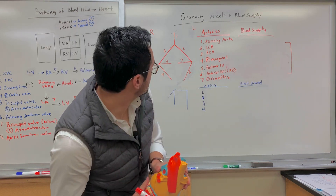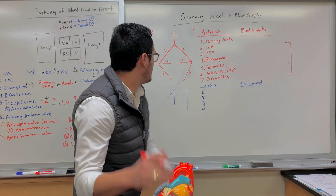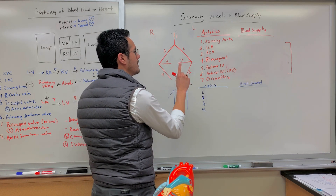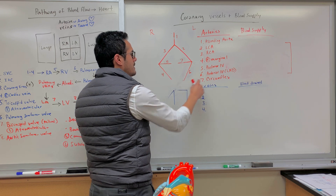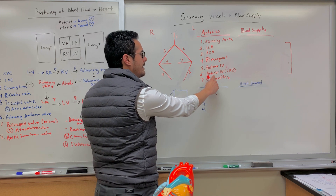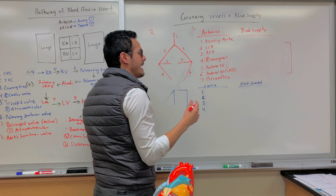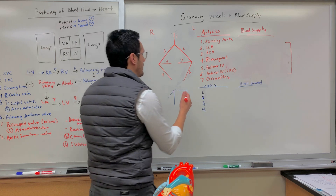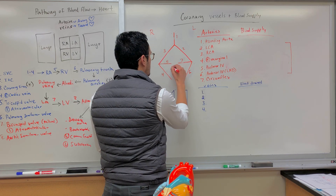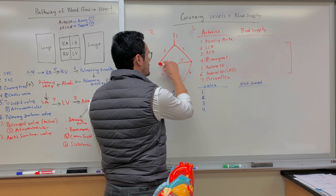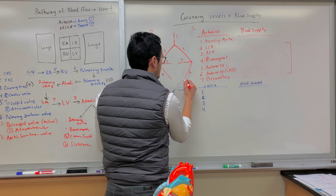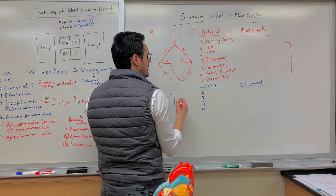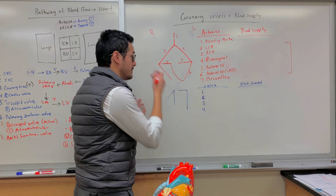Now that we have a general schematic, one other thing to mention is that the posterior and the anterior interventricular arteries have what's known as an anastomosis — they will merge together. The posterior interventricular comes around the backside, and then they converge through this anastomosis.